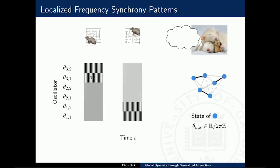This relates to the experimental data shown before. One position in the maze could correspond to one part of the network being more active, and another position to a different part being faster than the rest. So the first question I want to ask is: what is this localized frequency synchrony? We have two different frequencies in a network of identical units. How can we characterize this?